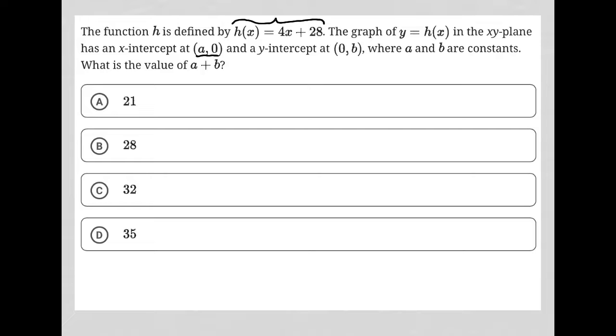So just remember what that means. That just means when y equals 0, x equals a. And a y-intercept at (0, b), which just means when x equals 0, y equals b. Where a and b are constants, what is the value of a plus b?